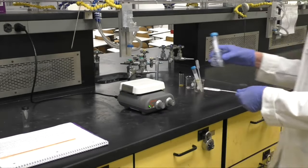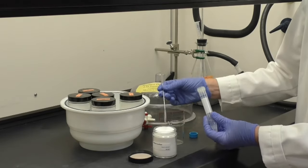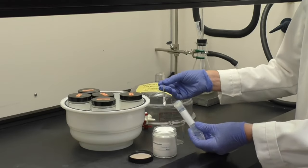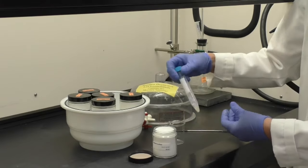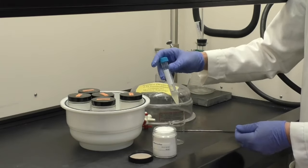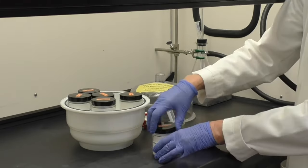Going back to your original centrifuge tube which contains the limonene, add a spatula tip full of sodium sulfate. Cap and shake vigorously to remove any water.